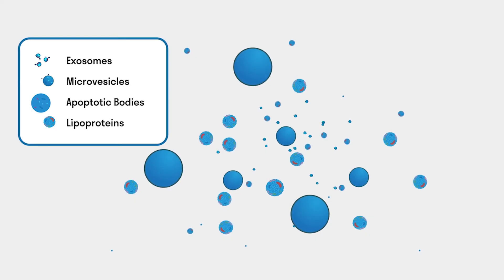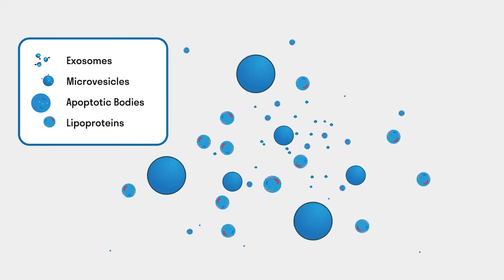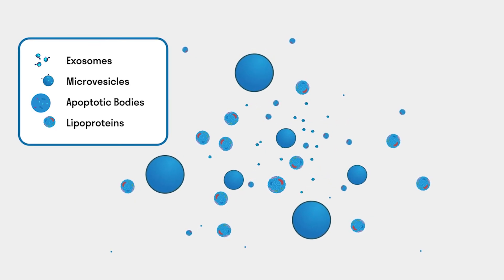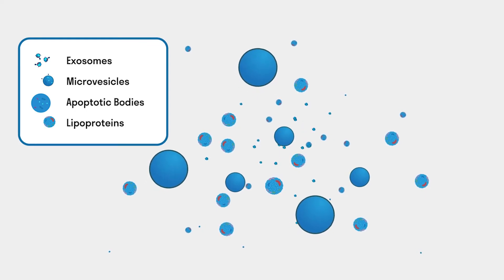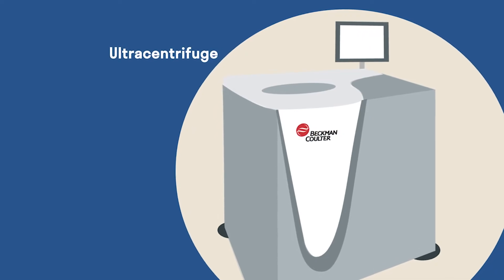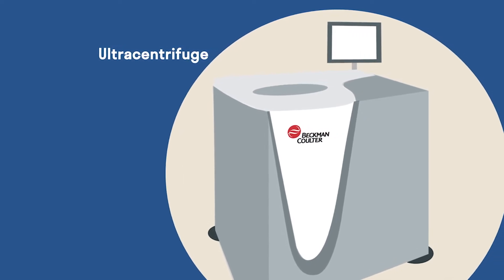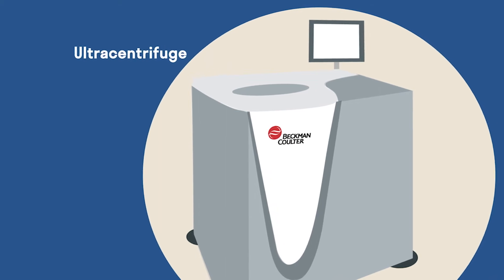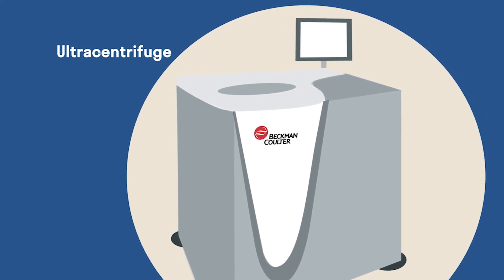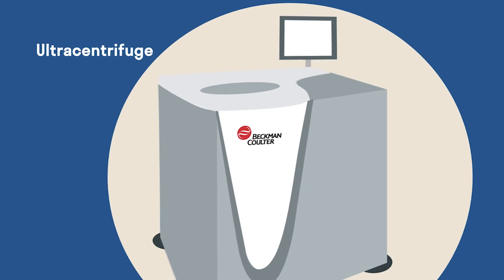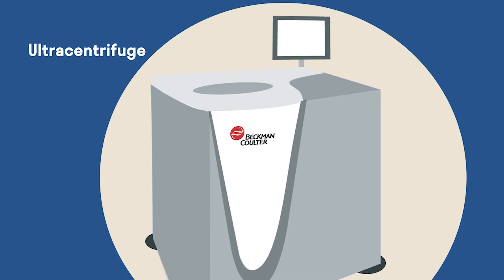To isolate EVs for clinical research or therapeutic development, the EVs must be separated from contaminants and other particles and subcellular components. Ultracentrifugation uses centrifugal force to separate the components in a heterogeneous mixture based on size and/or density. It is scalable from submilliliter quantities to hundreds of milliliters for a single batch.